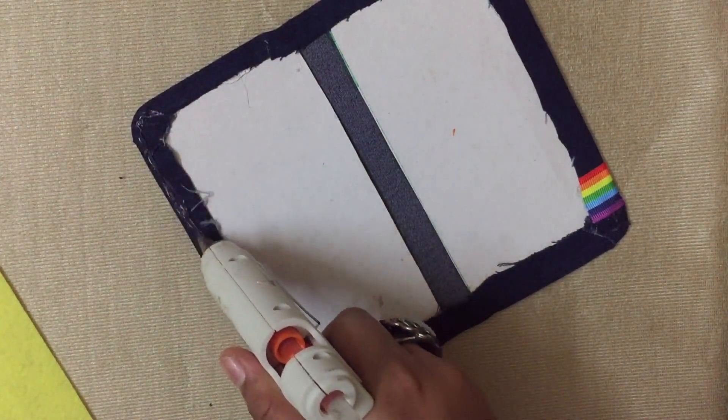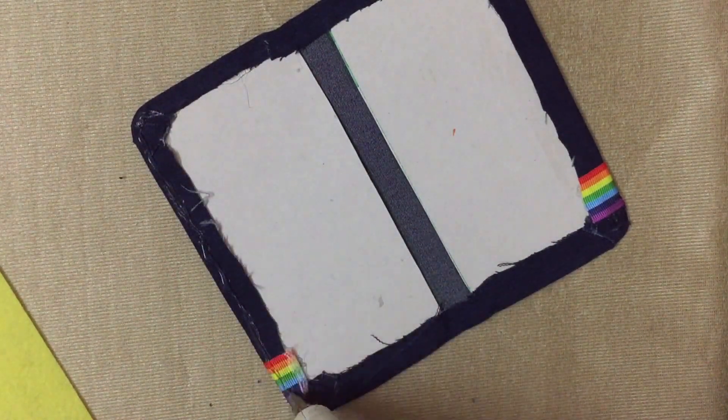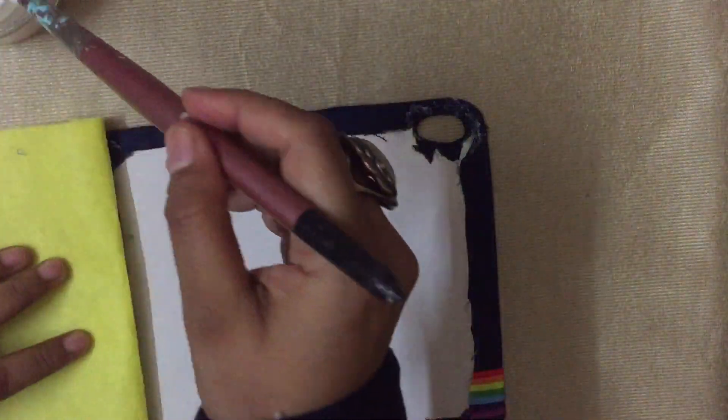Next, I'm gluing this piece of felt fabric on the inside of the cover. I'm using hot glue on the sides of the cover, and on the inside I will be using white glue.